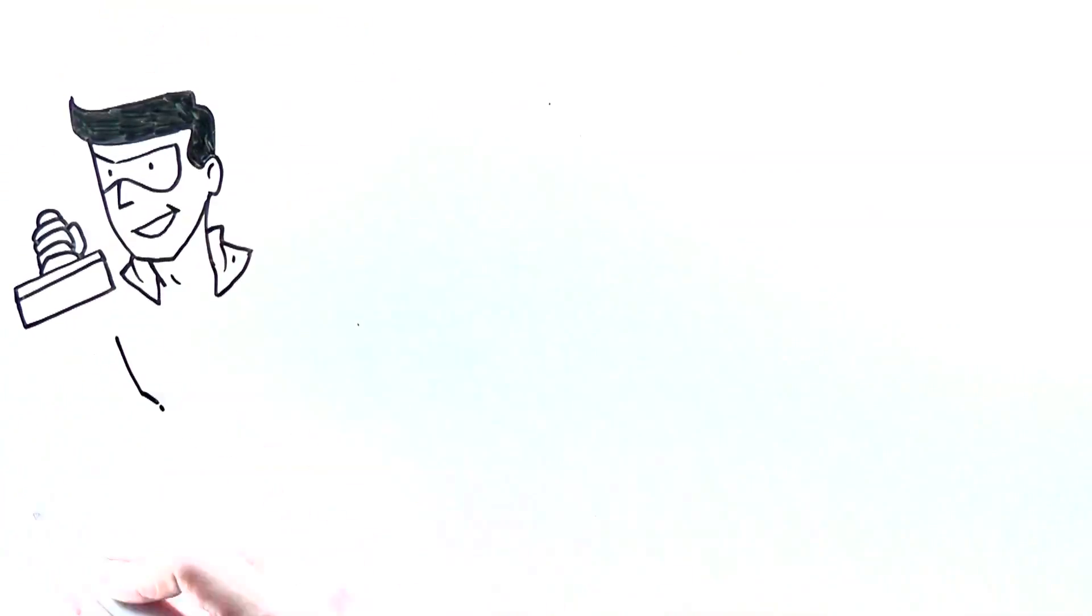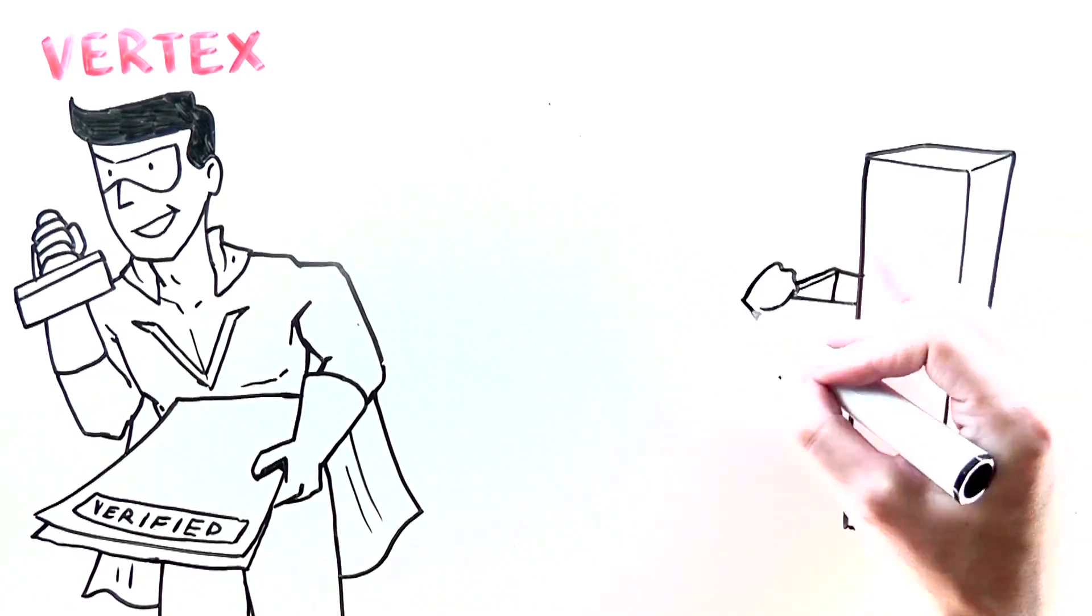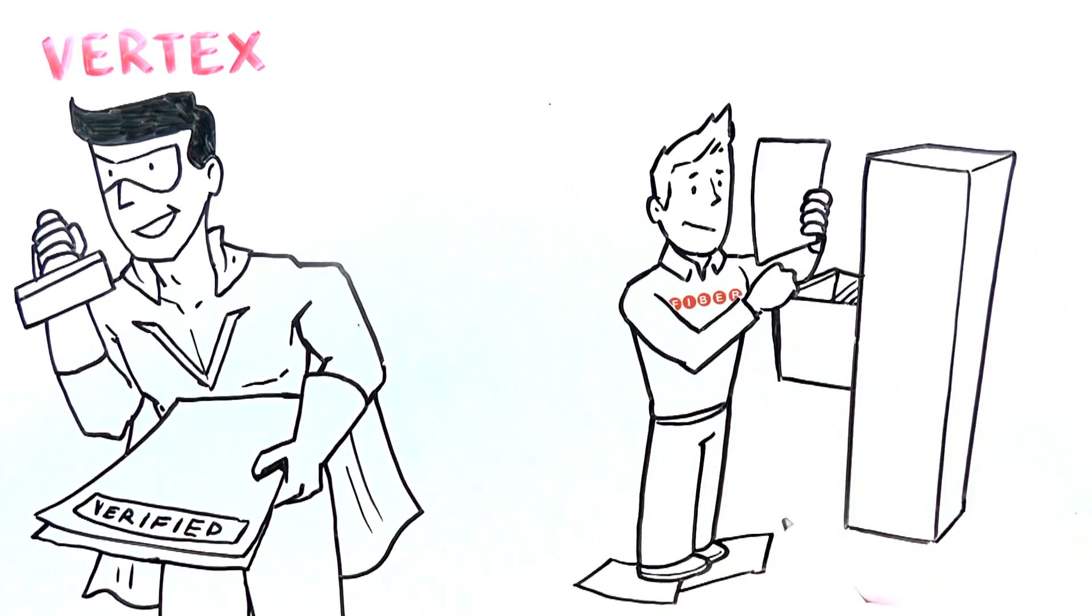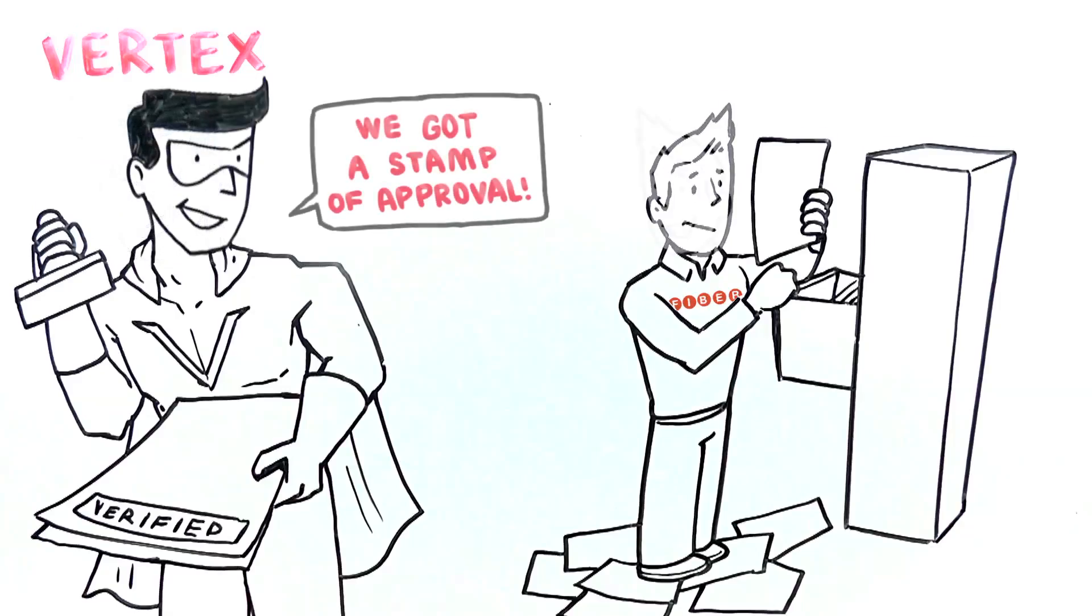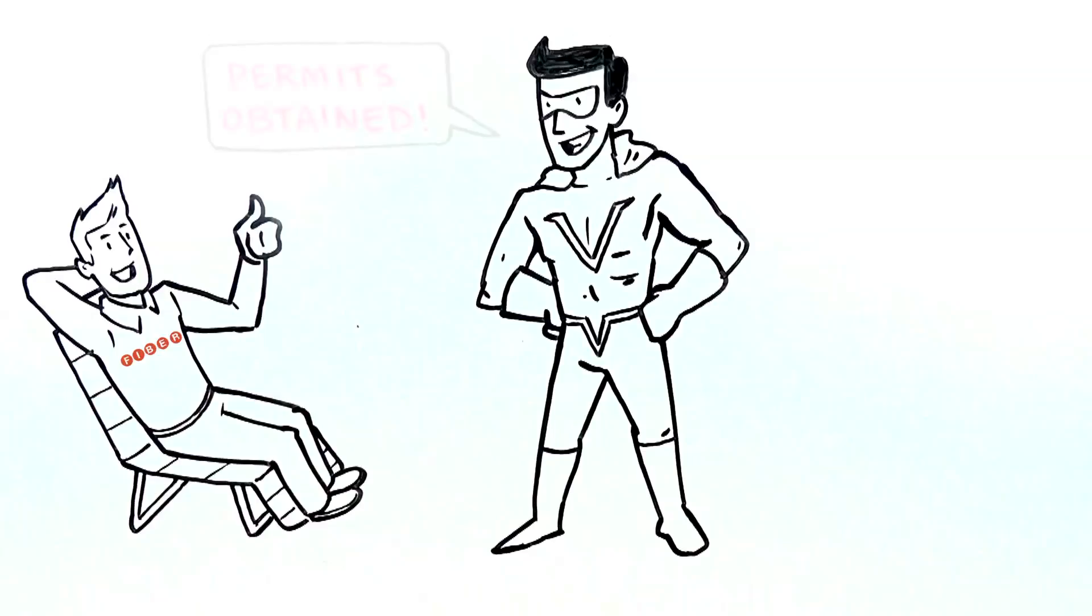Before construction can begin, all permits are verified and approved. This process is painful when not managed by Vertex. Local permit offices do not have the capacity to deliver efficient nor accurate documentation. Vertex will confirm that all permits are obtained without any hassle to the fiber provider.